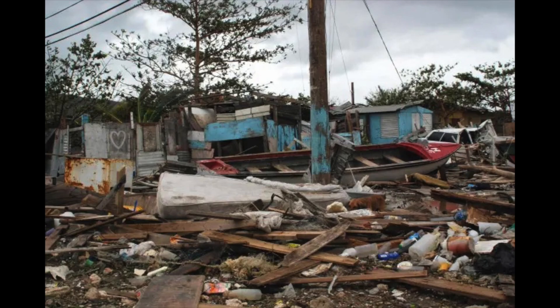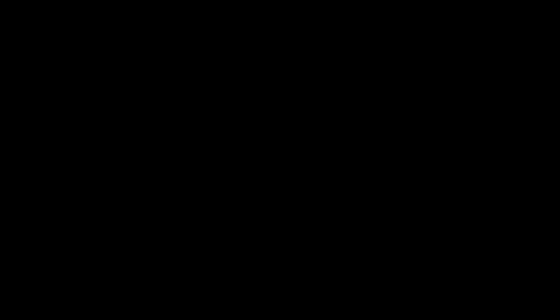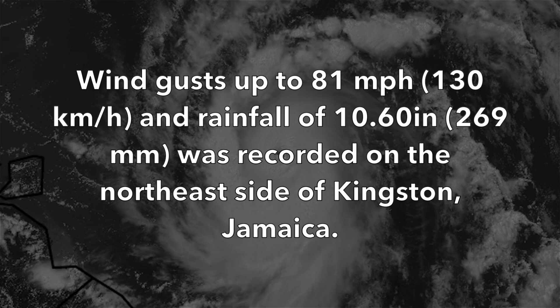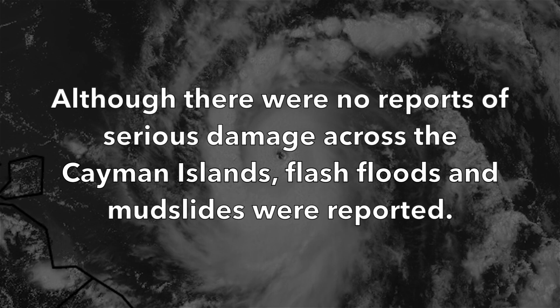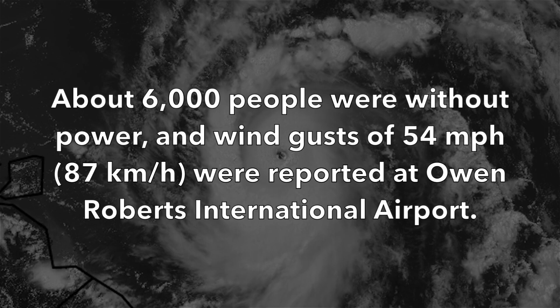Over 400,000 people were without power. Wind gusts up to 81 miles per hour (130 km/h) and rainfall of 10.60 inches (269 millimeters) were recorded on the northeast side of Kingston, Jamaica. Although there were no reports of serious damage across the Cayman Islands, flash floods and mudslides were reported. About 6,000 people were without power, and wind gusts of 54 miles per hour (87 km/h) were reported at Owen Roberts International Airport.